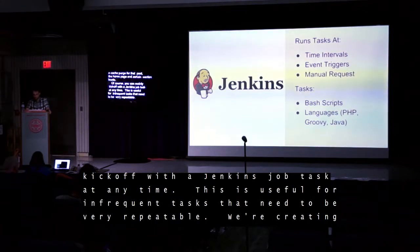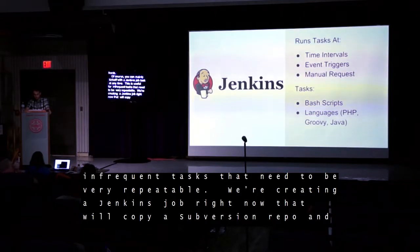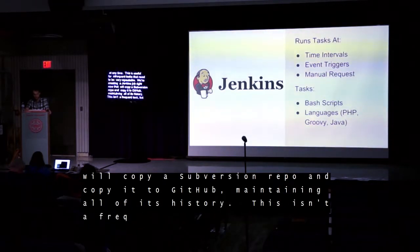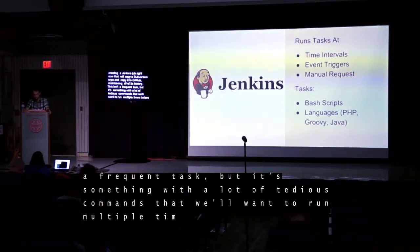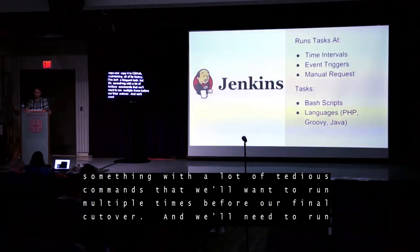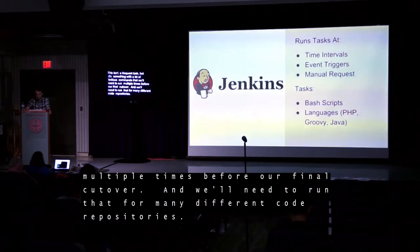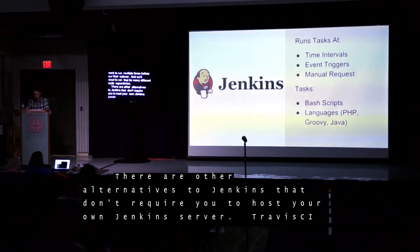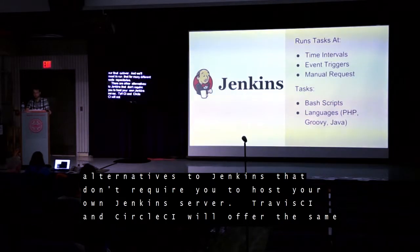We're creating a Jenkins job right now that will copy a Subversion repo to GitHub, maintaining all of its history. This isn't a frequent task, but it's something with a lot of tedious commands that we'll want to run multiple times before a final cutover — and we'll need to run that for many different code repositories. There are other alternatives to Jenkins that don't require you to host your own server. Travis CI and Circle CI, while not exactly the same, offer some similar functionality that you could use for these types of tasks.